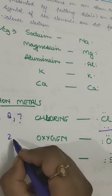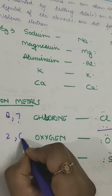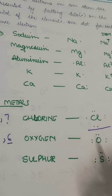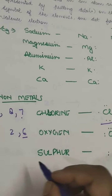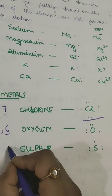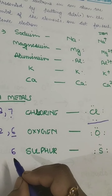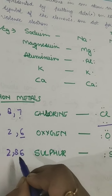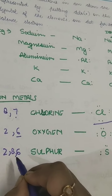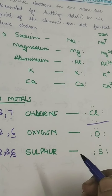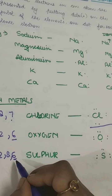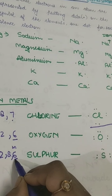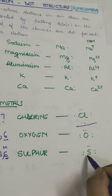Oxygen has 2 and 6 electrons, so 6 is the number of electrons in its outermost shell - 6 dots here. Sulphur's electronic configuration is 2, 8 and 6. The M shell is the outermost shell, having 6 valence electrons, so 6 dots here.